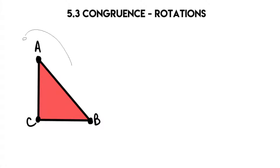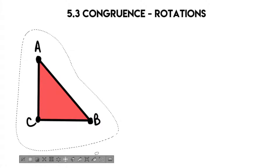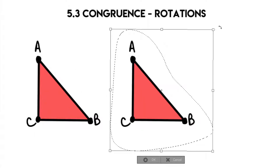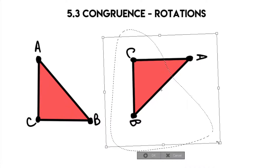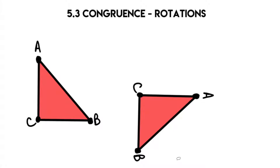Rotations means that we're going to be taking a shape, and the shape is going to turn. It is going to rotate — in essence, spin. And that is going to be the key word for this one. Translations were sliding, reflections were flipping, and rotations are spinning. Rotations spin. It causes the shape to spin on itself.